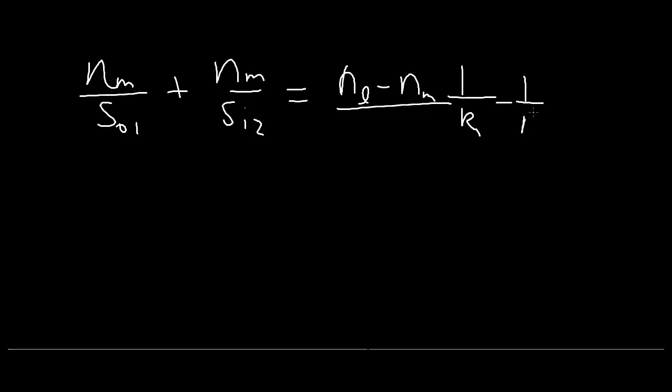What we end up with becomes quite a bit simpler now. We have Nm over SO1 plus Nm over SI2 is equal to Nl minus Nm, 1 over R1 minus 1 over R2. Dividing the Nm over, we have 1 over SO1 plus 1 over SI2.